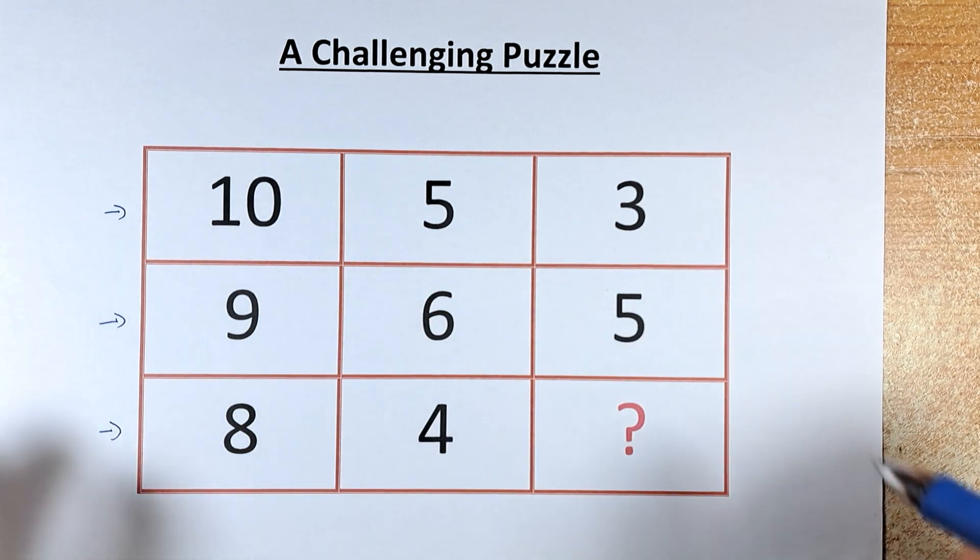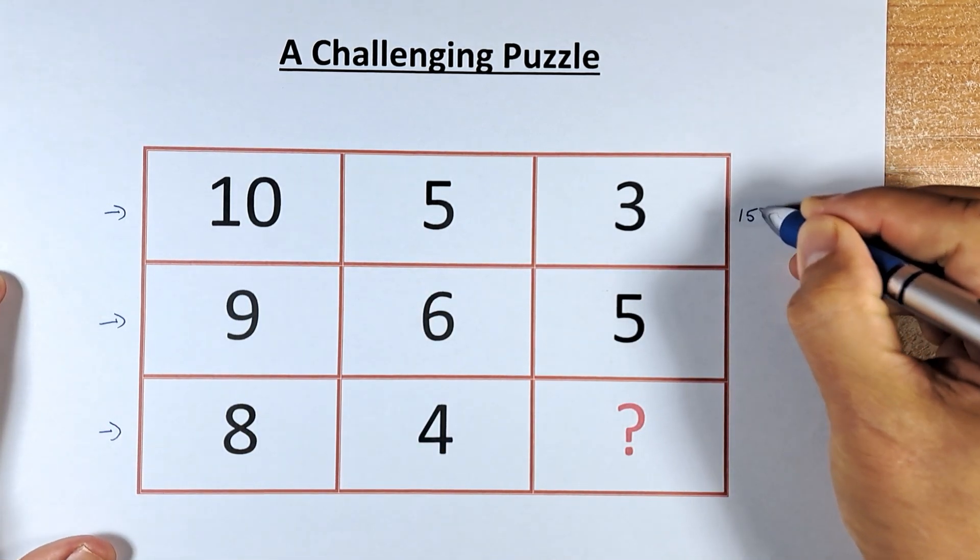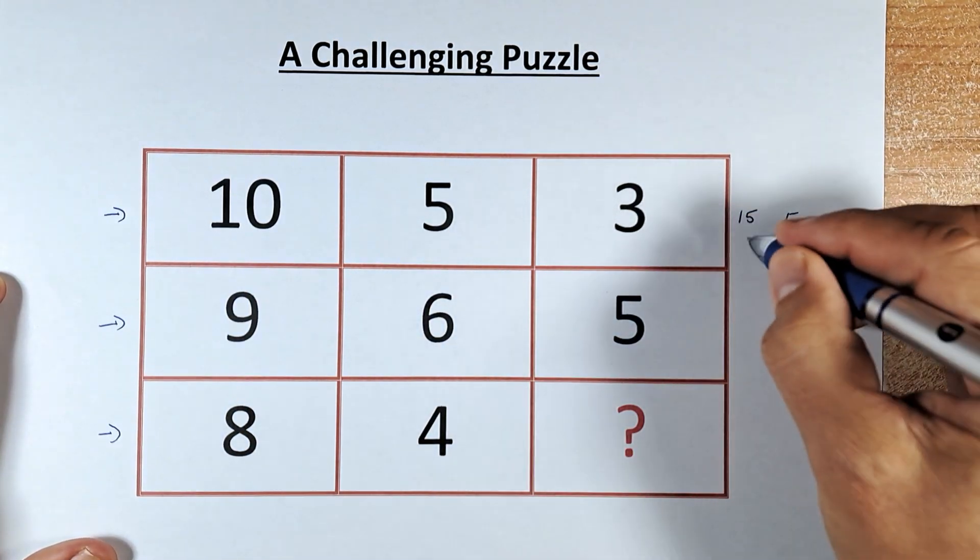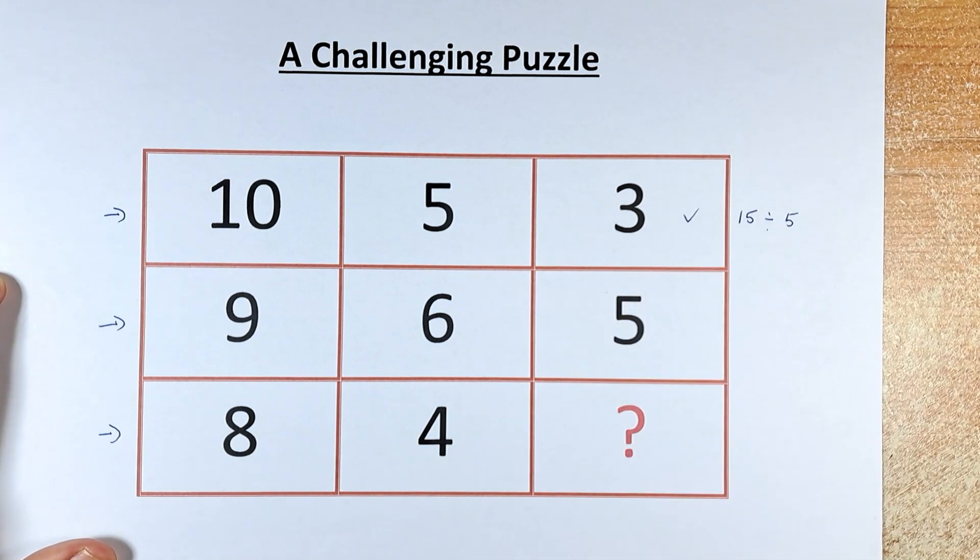Column 1, column 2. So 10 plus 5 is going to be 15. And then 10 minus 5 is going to be 5. And the last step, we're going to take 15, divide by 5, and we get 3.